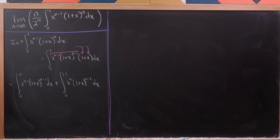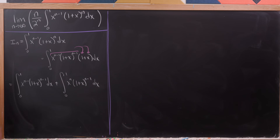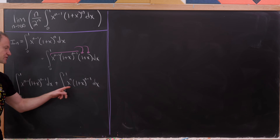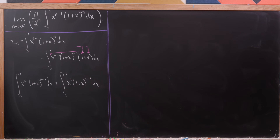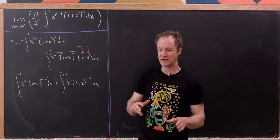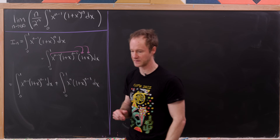Taking a step back, observe that we started with an integral where the power of x was 1 smaller than the power of 1 plus x. Now we've turned that into this integral where the exponents are the same, and then this integral where the exponents are flipped. We're going to start weaving these types of integrals together until we form some sort of equation involving these integrals.